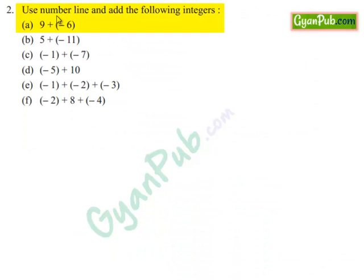Let us move on to the second question: use a number line and add the following integers. A) 9 plus minus 6. B) 5 plus minus 11. C) minus 1 plus minus 7. D) minus 5 plus 10. E) minus 1 plus minus 2 plus minus 3.